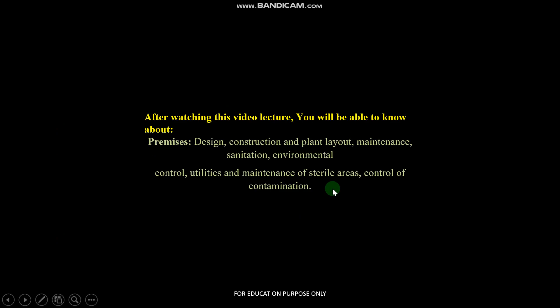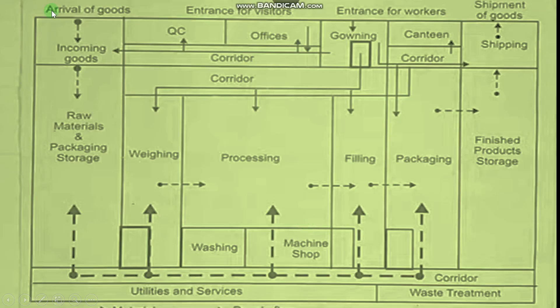After watching this video you will be able to know about the different types of premises: the design, the construction, the layout, the maintenance, the sanitation, as well as environmental contamination control. Let's start with the layout. As you can see, this is a simple layout of a pharmaceutical house — it is an industry layout.